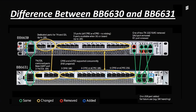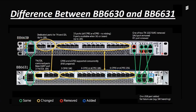We will go left to right for both basebands to know the difference between 2630 and 2631. For the BB 2630, we can see the model number here. We have two power supply ports — A on top and B on the bottom — for primary and secondary power. You can give power from a rectifier, PDU, or DCDB box, but you must give only DC supply at minus 48 volts.